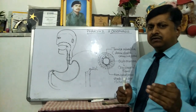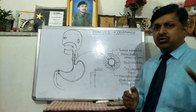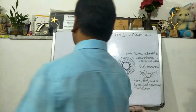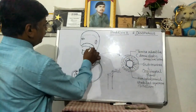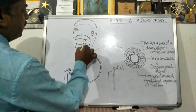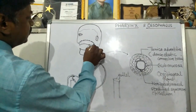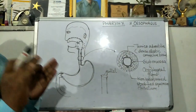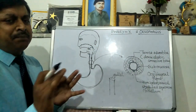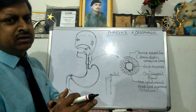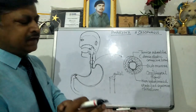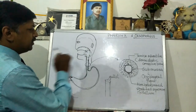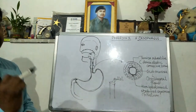The pharynx is a common passage. When the tongue pushes the bolus — partially digested food — in the forward direction, the food passes through the pharynx. The pharynx has three parts.